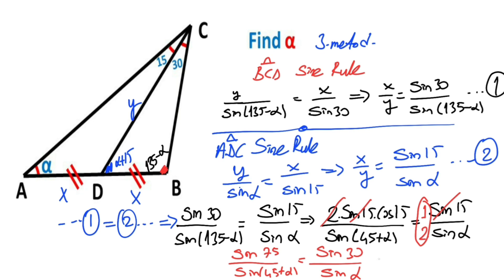We know that we can write sine 30 instead of 1 over 2, which means alpha equals 30 degrees. Thanks for watching, and if you want more videos like this please subscribe to my channel.